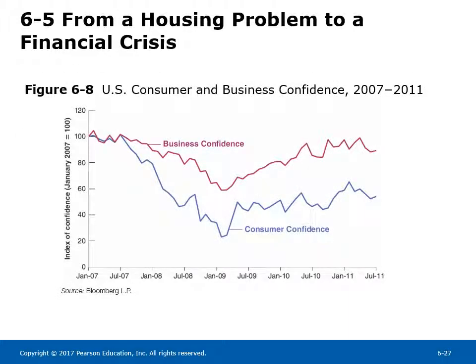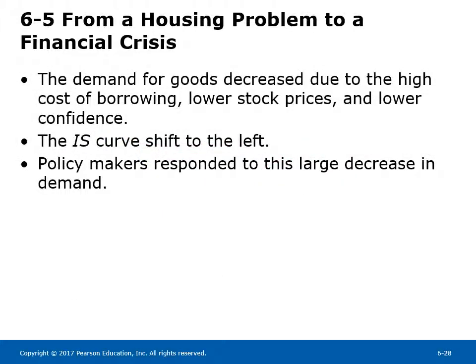Figure 6-8 shows US consumer and business confidence from 2007 to 2011. The financial crisis led to a sharp drop in consumer and business confidence from 2007 to 2009, which in turn affected output; confidence bottomed in early 2009. Demand for goods decreased due to the high cost of borrowing, lower stock prices, and lower confidence. The IS curve shifted to the left. Policymakers responded to this large decrease in demand with financial policies, monetary policy, and fiscal policy.